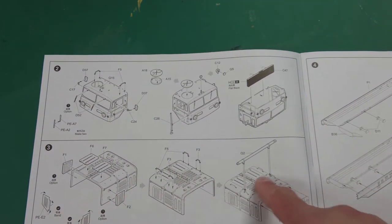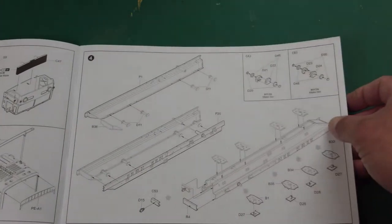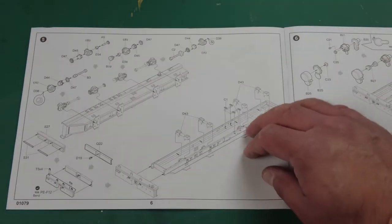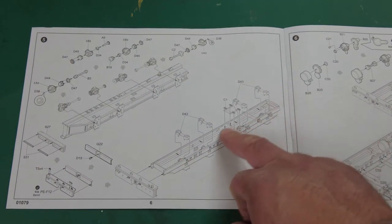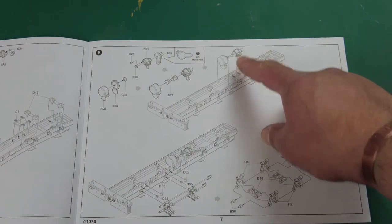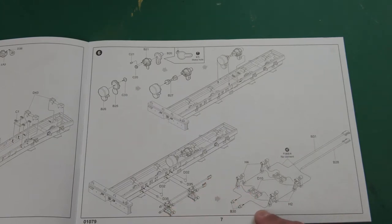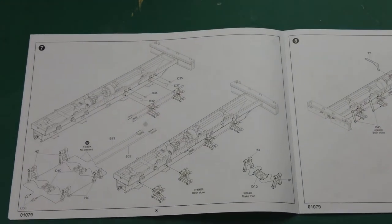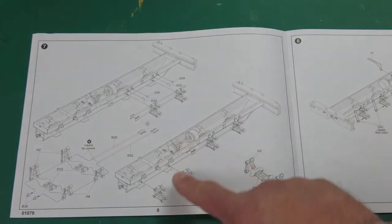Finishing the cab off then for step two. Step three, we're moving on to what I would assume will be the body of the vehicle where the engine is. Step four, we're starting to look at the chassis. Step five, the chassis is built, we're starting to move on to the torsion bar suspensions and the final drives, and they're all going on to the chassis spacers.